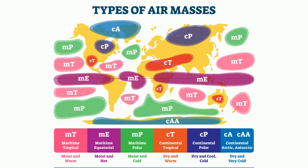What about lowercase m, capital E? Around the equator you will find very warm, moist air. So the lowercase m, capital E is a maritime equatorial airmass. It will be very warm because it's equatorial, and very moist because it's maritime.